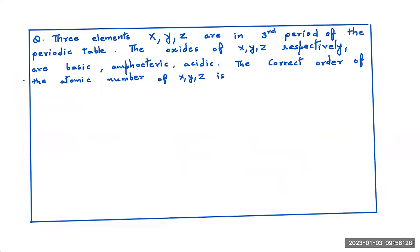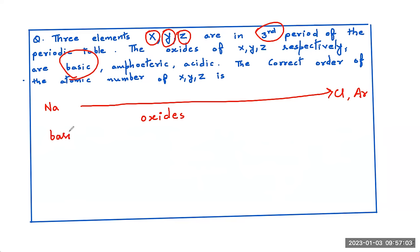Let us move to the next question wherein we have three elements X, Y, Z and they are in the third period. That is somewhere from sodium to we can say chlorine followed by argon. The oxides of X, Y, Z. I want to convert them into their oxides. On the left we will get basic oxides. Then somewhere in the center like aluminum we will get amphoteric. And as we move towards the right we get non-metals on the periodic table which make acidic oxides.